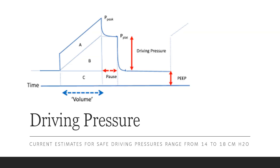Here you can see a pressure-time graph, and the difference between the plateau pressure and the PEEP is the driving pressure. The current estimate for a safe driving pressure range is 14 to 18 cm of water.